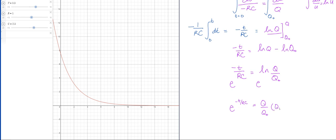So I multiply by Q_naught and I'll just flip these and say that Q(t) is equal to Q_naught times e to the -t/RC.